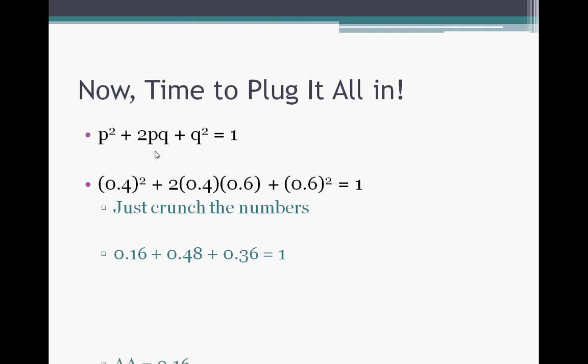The only thing you have to do now is remember what each part of this equation stands for. So big A, big A is 0.16, because p² corresponds to the homozygous dominant phenotype, or genotype, sorry. Big A, little a is 0.48. So there's your two ones, and you already know what little a, little a is. We did that earlier.